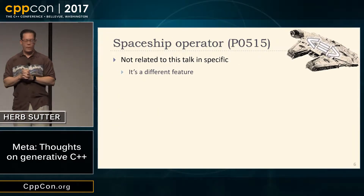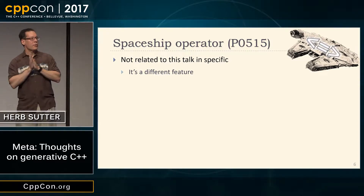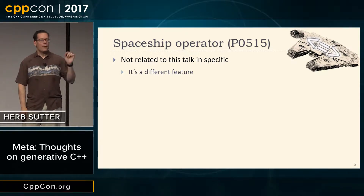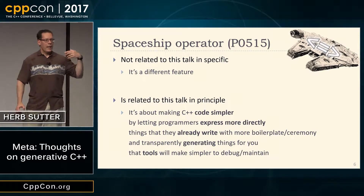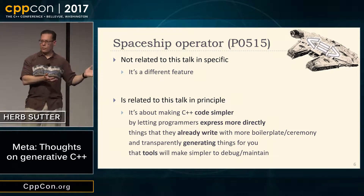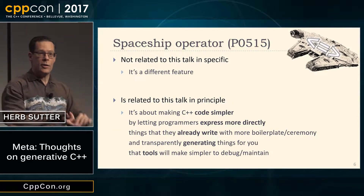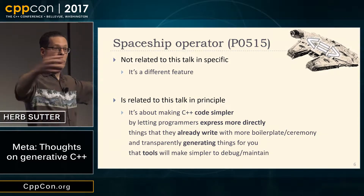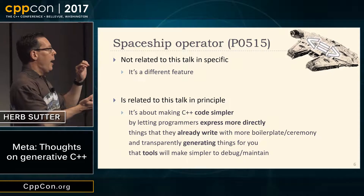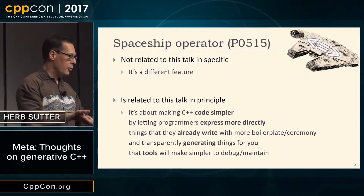This has nothing to do with this talk — and yes, it looks like a TIE fighter, Vader's in particular, but I choose the Falcon, so sue me. It also kind of is that shape if you squint just right. But the reason this was a nice segue is because the rest of this talk, especially the part about metaclasses, is about making C++ code simpler. We're adding features to the language — the language is growing incrementally — but C++ code should be simpler to write. How? By letting programmers state their intent more directly instead of circuitously.